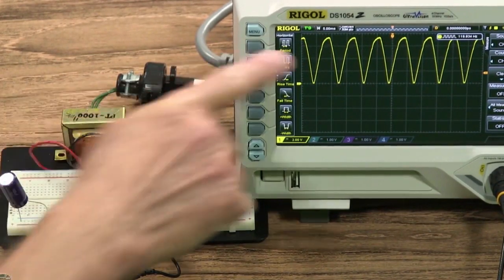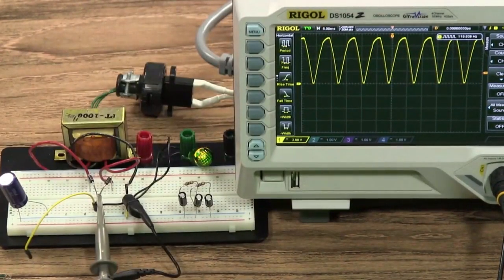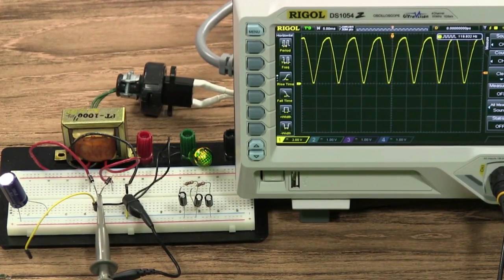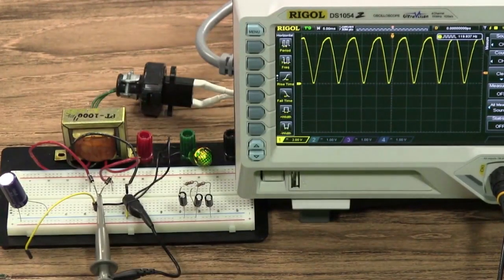But still, that really looks more like AC than it does DC because it's unfiltered. There's all this ripple current in there.